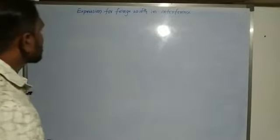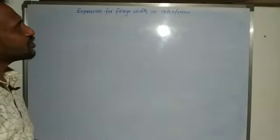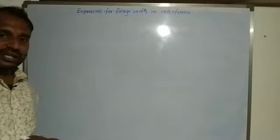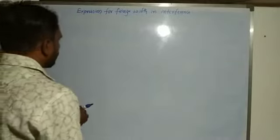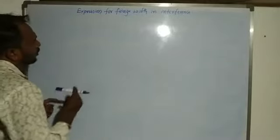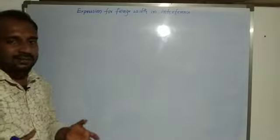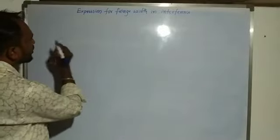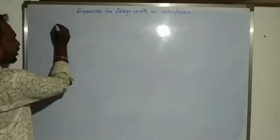Our next concept is the expression for fringe width in interference. We consider Young's double slit experiment as our setup here.